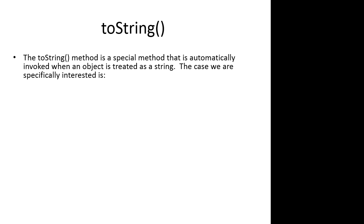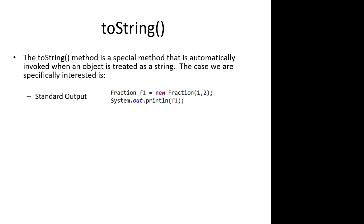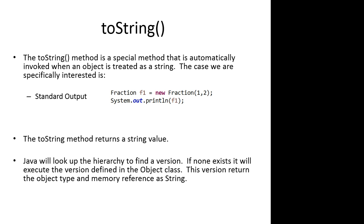So the toString method is a special method that is automatically invoked when an object is treated as a string. The case we're specifically interested in is standard output. The toString method returns a string value, and Java will look up the hierarchy to find a version. If none exists, it will execute the version defined in the object class, which returns the object type and memory reference as a string. Java starts at the most specific class possible and works its way up the hierarchy until it finds a version.